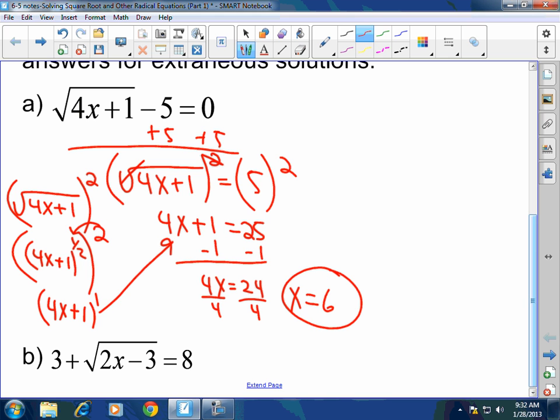The one thing you do have to do, I am sorry guys, but you always have to check. So we got to check. Square root of 24 plus 1 is 25 minus 5. Does that equal 0? Yes, because the square root of 25 is 5. 5 minus 5 is 0. So we're golden.